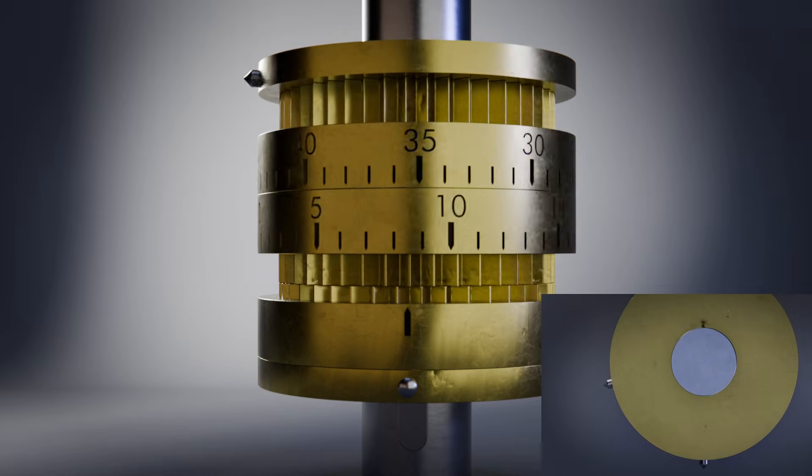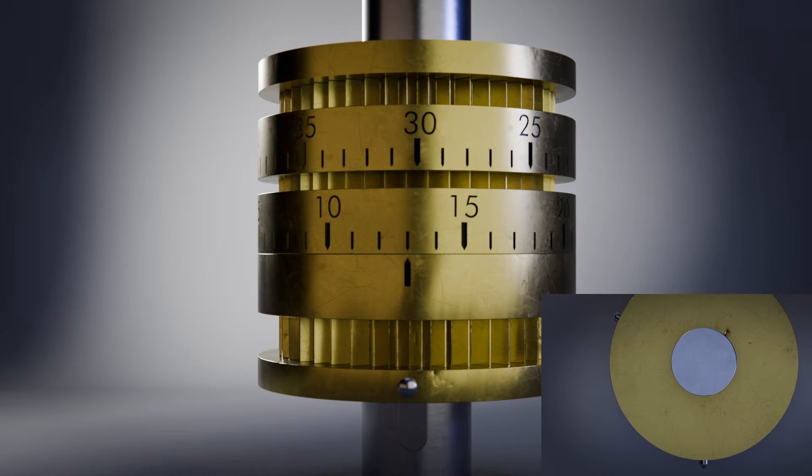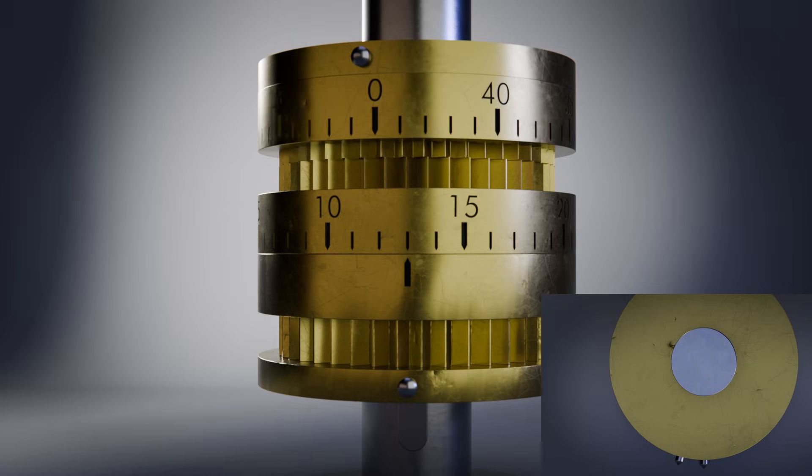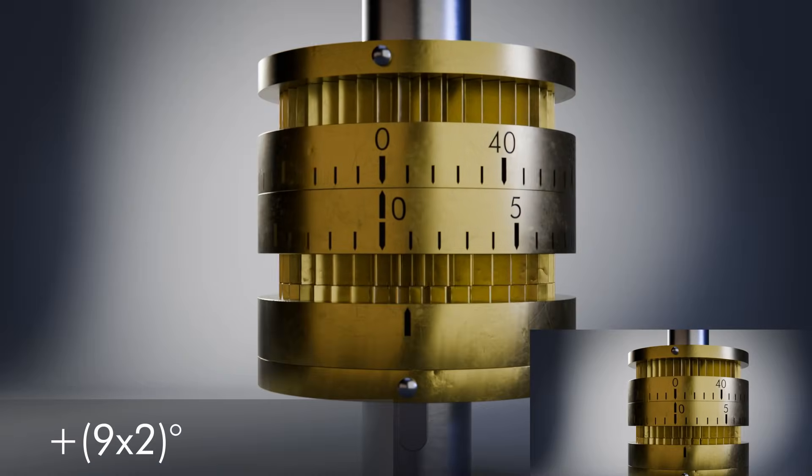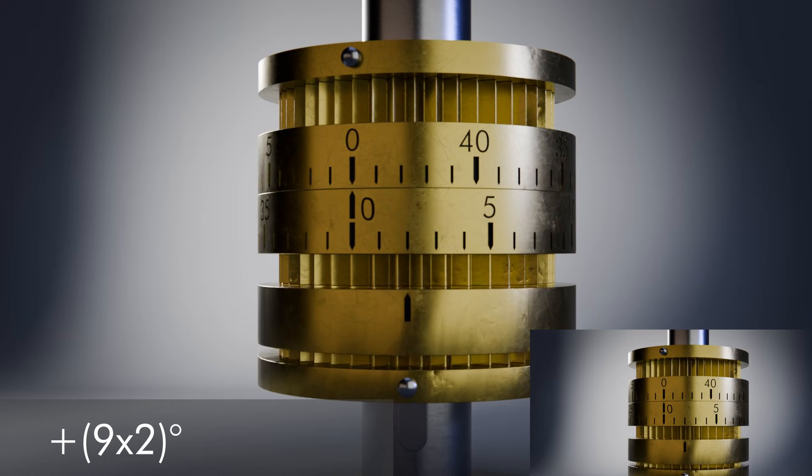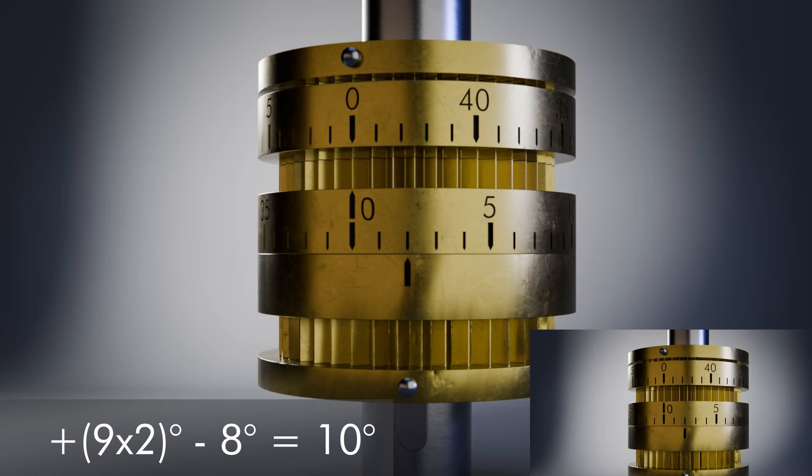You can always do the forward and back in equal amounts to advance however many degrees, but it doesn't have to be in equal amounts. For example, if you want to advance 10 degrees, you could advance the 40 side twice, so 2 times 9 for 18 degrees, then the 45 side back once for minus 8 degrees or 10 in total. Cool, huh?